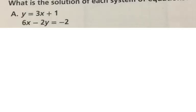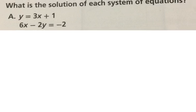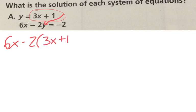Here it asks me to find the solution to the system of equations. So if I'm going to use substitution, I need an isolated variable. Do I have that? I do. So I can take this, 3x plus 1, and I'm going to plug it in for y here. That gives me 6x minus 2 times y, which is 3x plus 1, equals negative 2. Is everyone good with that?